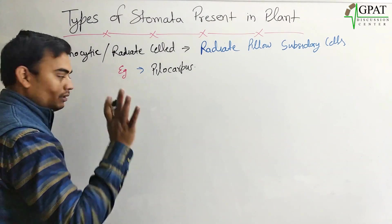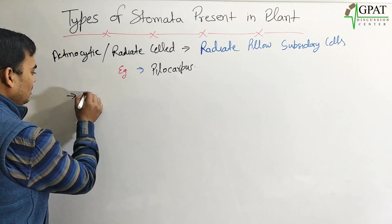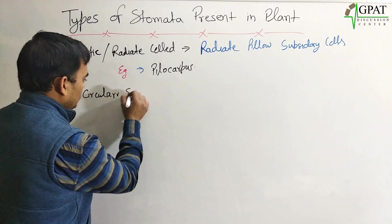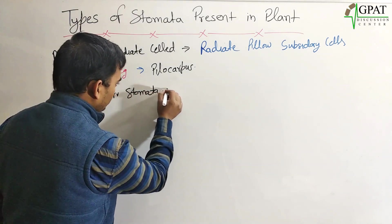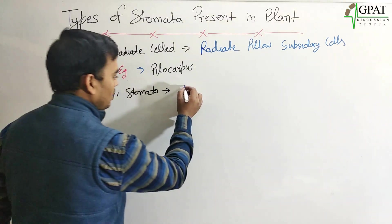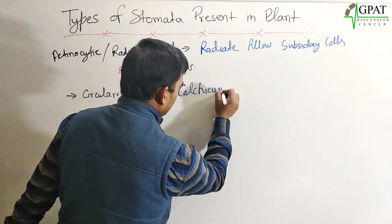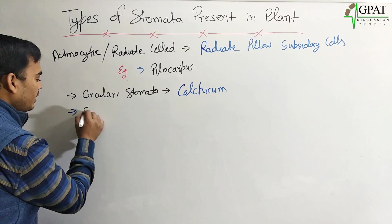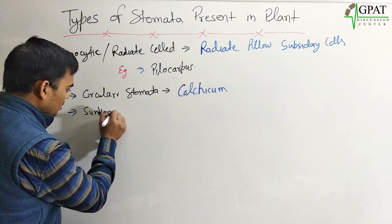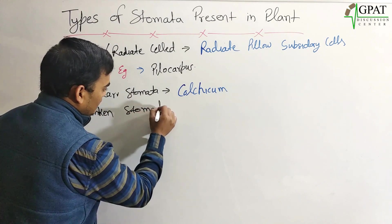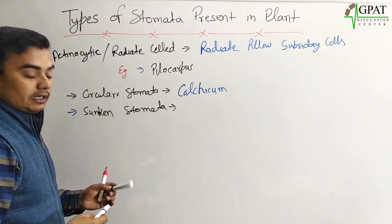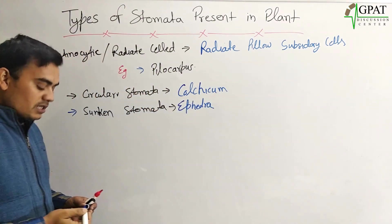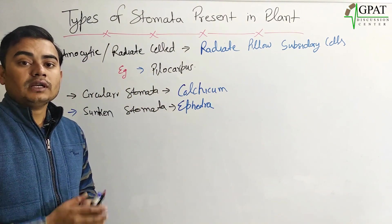These are the basic types of stomata, but there are some special stomata as well. Circular stomata is very important and is frequently asked in questions — circular stomata is present only in Colchicum. Another special stomata is sunken stomata, which is present in Ephedra. These are the basic examples of stomata and the plants in which they are present.